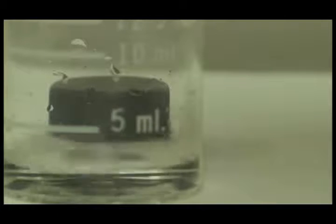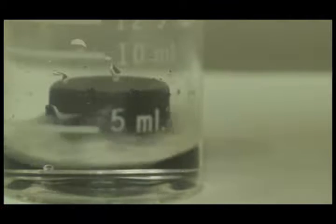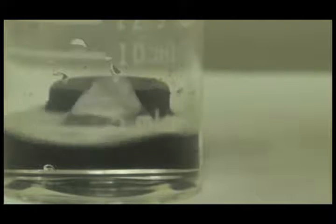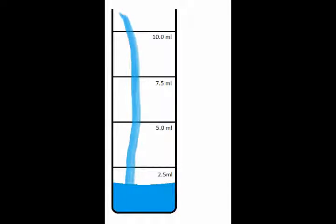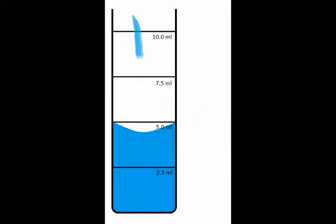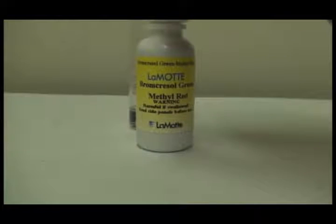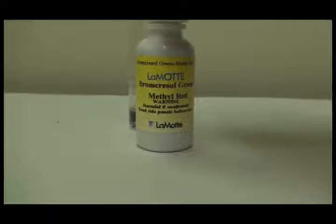Now it is time to fill the test vial labeled 0608 to the 5 mL mark using sample water taken from our pond. Remember to read from the bottom of the meniscus. Next we add four drops of the indicator solution.